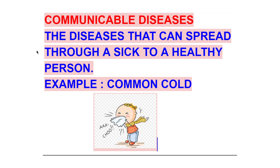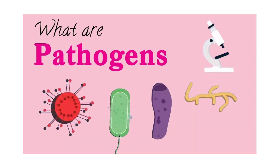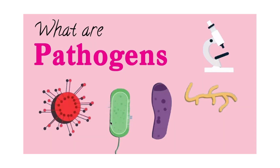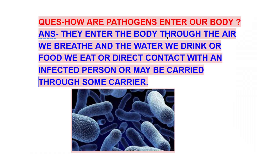Communicable diseases are those that can spread from a sick person to a healthy person. For example, with common cold, when a person is sneezing, the neighboring person or friend child can also get infected. Communicable diseases pass from one person to another through pathogens. Pathogens are those microorganisms which are responsible for carrying the disease from a sick person to a healthy person.